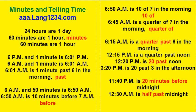Six p.m. and one minute is 6:01 p.m. Six a.m. and one minute is 6:01 a.m. 6:01 a.m. is one minute past six in the morning.